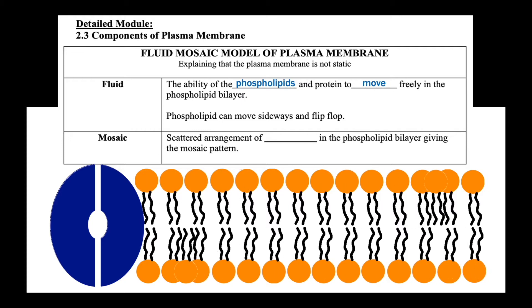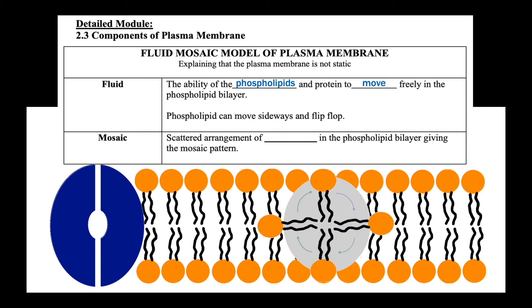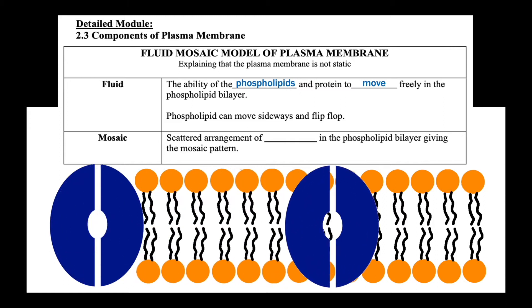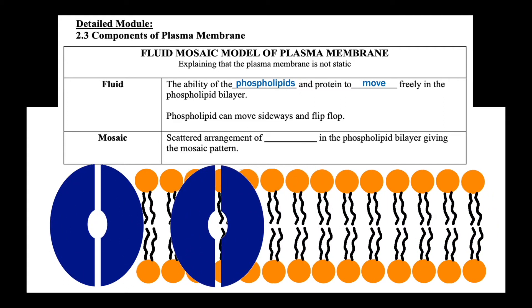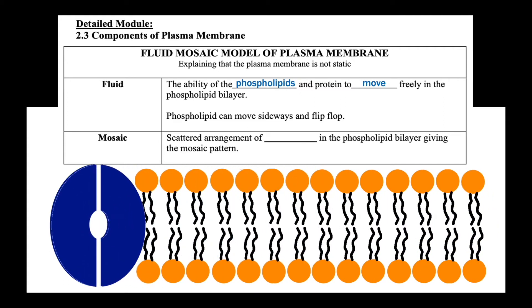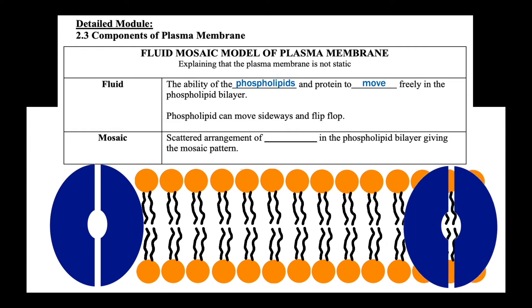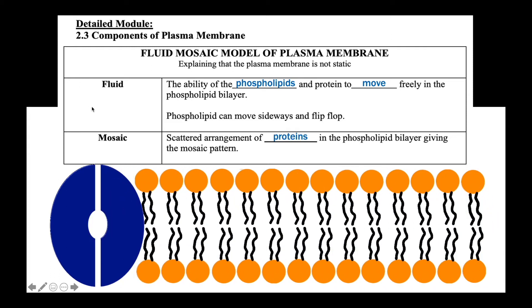Sometimes a phospholipid can also do a flip-flop. However, proteins can only move laterally — proteins cannot do a flip-flop. Mosaic refers to the scattered arrangement of proteins in the phospholipid bilayer, giving the mosaic pattern.